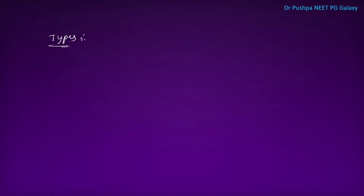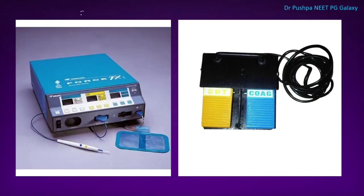There are two types of cautery: monopolar and bipolar. On the cautery machine, the foot pedal is used to control the cautery. The yellow color setting is for cutting and the blue color is for coagulation.